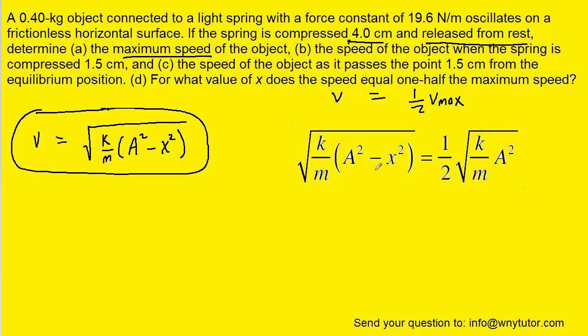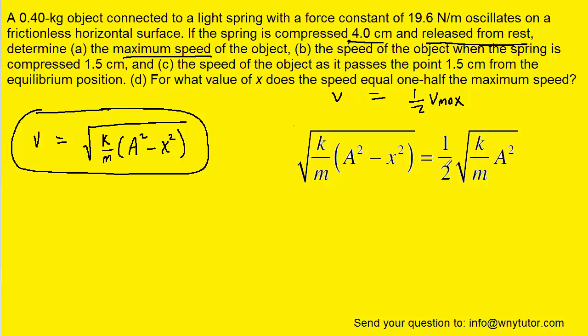We can actually square both sides of this equation to get rid of the root. Notice that we would end up squaring the one-half to make one-fourth. We have a factor of k over m on both the left and right-hand side so it can be divided out.